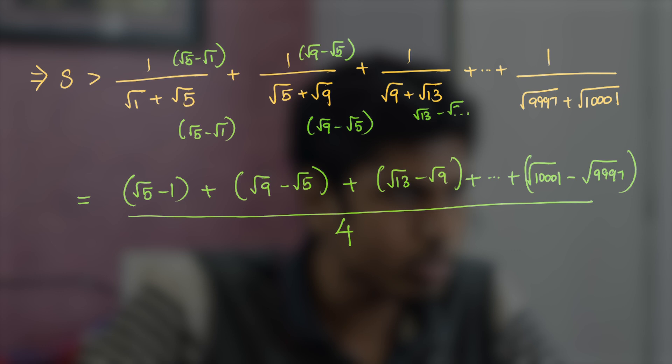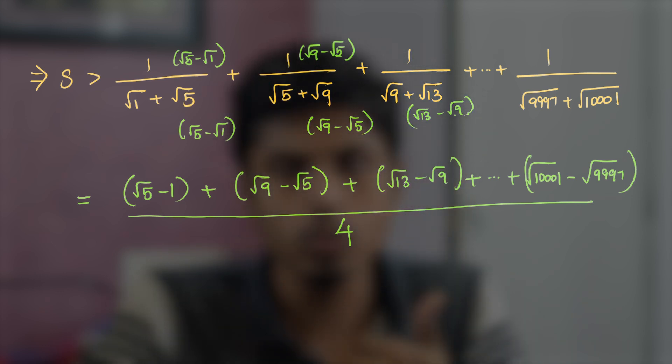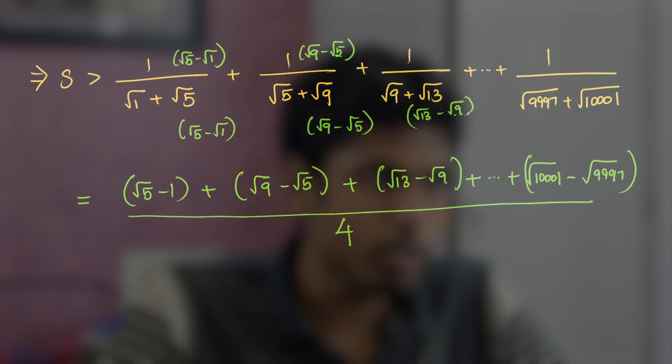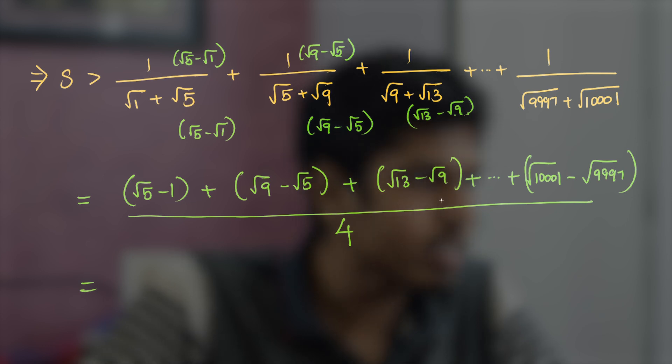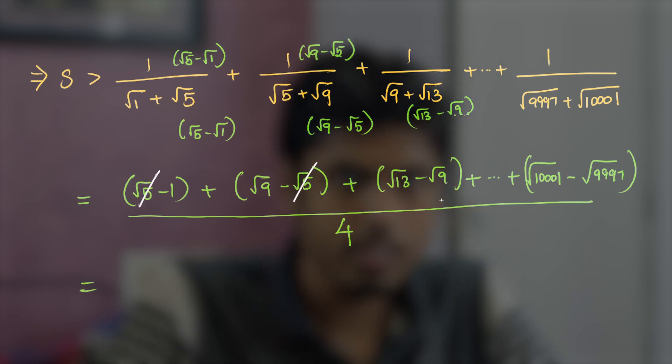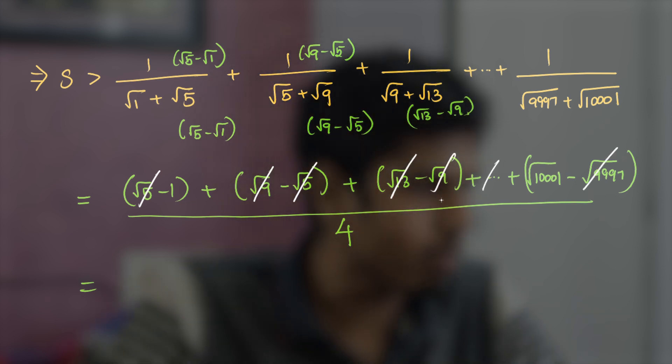In the third term, we multiply root 13 minus root 9, which actually is 13 minus 9 by a plus b into a minus b identity, because it is a square minus b square, which is root 13 square minus root 9 square, that is 13 minus 9 which is 4. This follows for all the denominators.